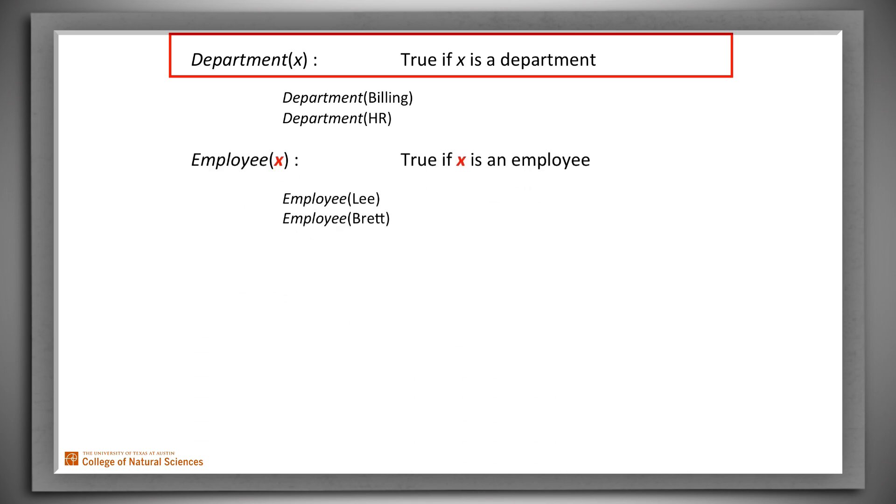Now we can write our second definition, Employee. Again, the scope of any variables is that one definition. In other words, these two definitions are to be interpreted separately. That means that we can use the same variable name. Remember it's just a symbol, as we've done here in reusing X. But of course we could also use a different symbol, for example Y. The key is that we have to use the same symbol consistently throughout each individual definition.